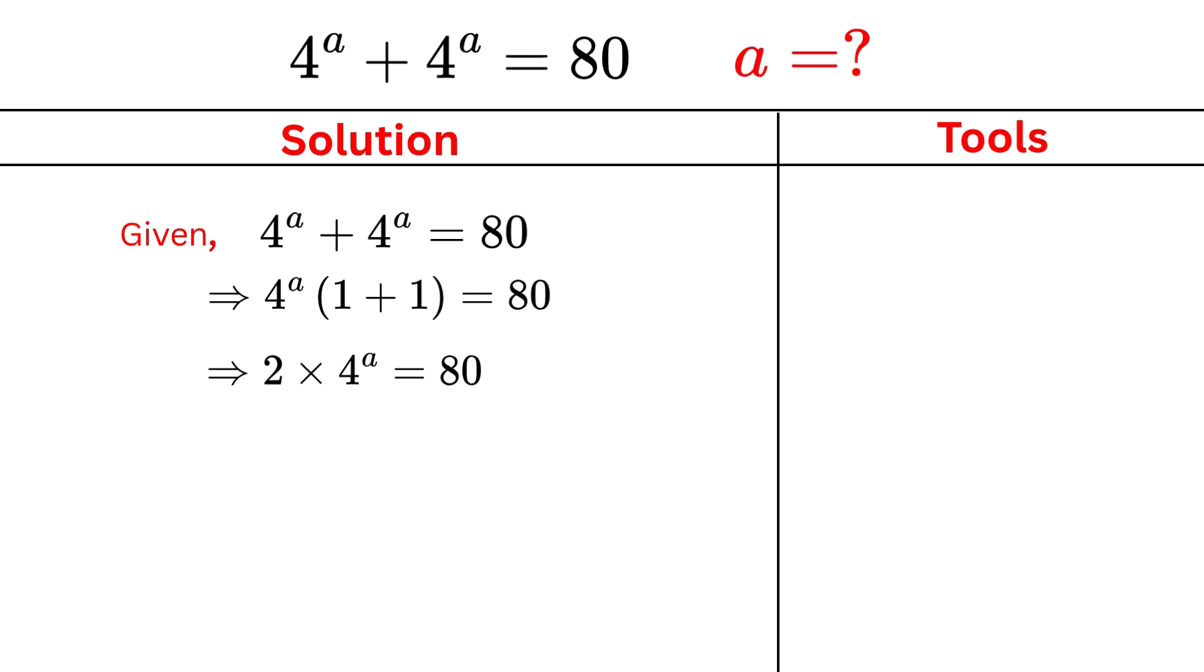Now we divide both sides of the equation by 2. On the left, 2 gets cancelled out, and on the right, 80 divided by 2 gives us 40. So now we are left with 4^a = 40.